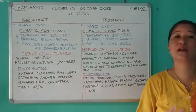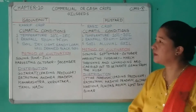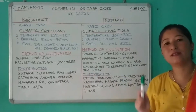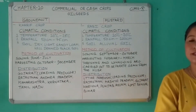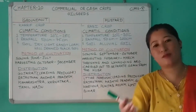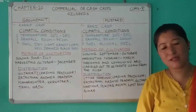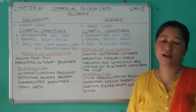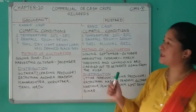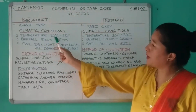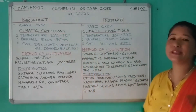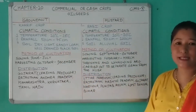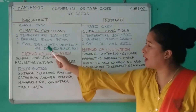Stagnant water is also harmful for the groundnut crop. Groundnut is a kharif crop, meaning it is grown in the summer season. In southern states and Odisha it is also raised as a rabi crop, but in the rest of the country it is grown as a kharif crop. The climatic conditions are: temperature 20°C to 28°C, and rainfall 50 cm to 75 cm.